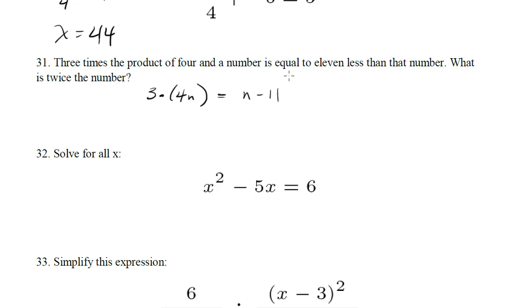If you're having trouble with this, check out the translating words into algebra series of videos in both the bootcamp and the SAT Math Tactics series. So this becomes 12n equals n minus 11. Subtract n from both sides, we get 11n equals negative 11, or n equals negative 1.